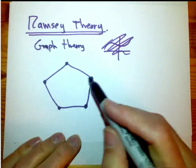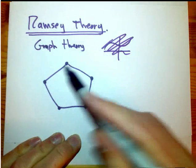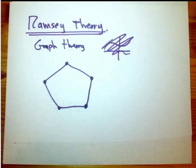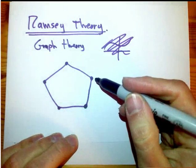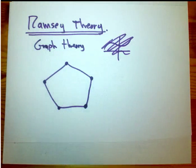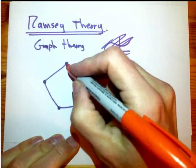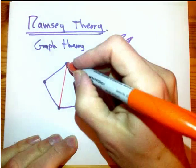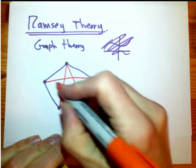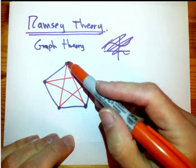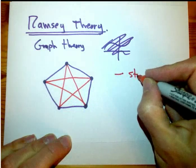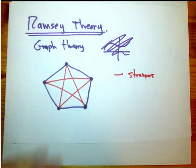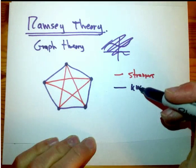Sometimes you have directed graphs, which means you have an arrow or some sort of flow from one thing to another. But when you're talking about whether two people know each other, that's a mutual, symmetrical relationship — so you just connect things or you don't based on whether they know each other. Let's connect them in purple if they know each other, and I'm going to use orange for pairs of people who don't actually know each other — so orange means strangers and purple means they know each other.